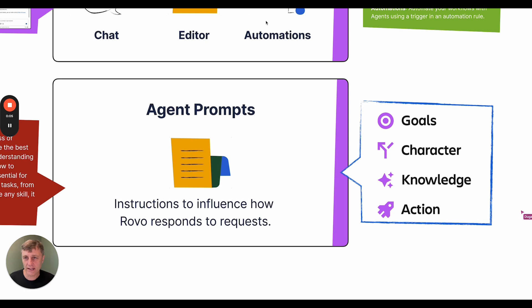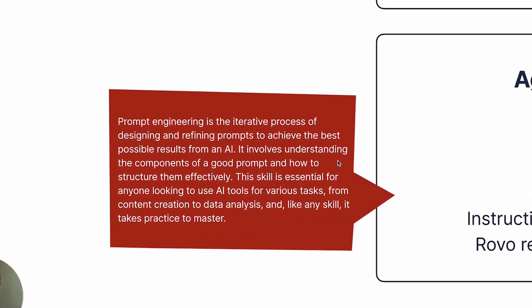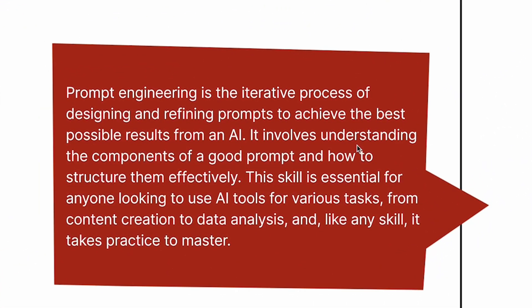Every agent has a prompt. This is where the behaviour of the agent is defined. Good prompts define aspects such as the agent's goals, character, knowledge sources, and actions that the agent can take. Prompt engineering is a skill which takes practice — it's like coding, but instead of using traditional coding languages like JavaScript, the code is in natural language.